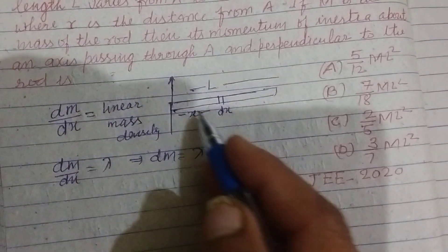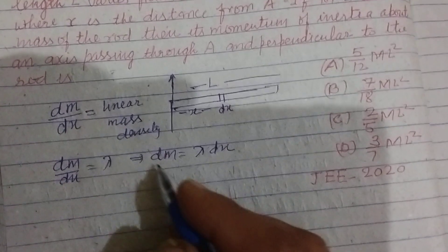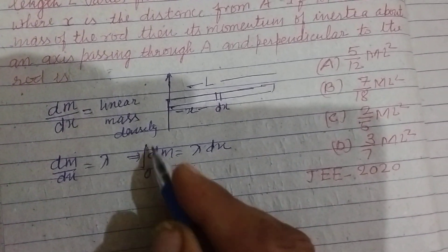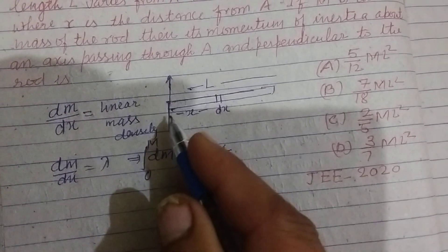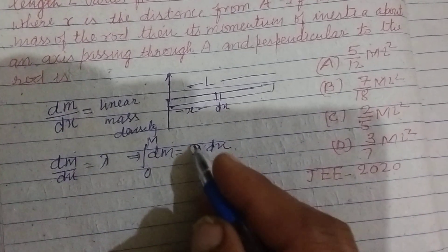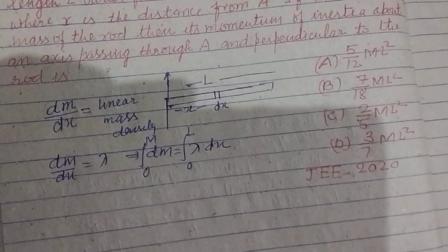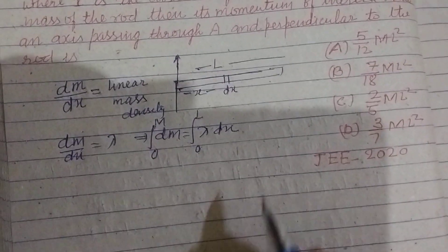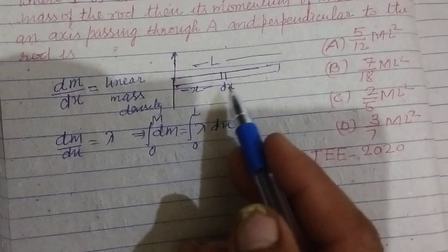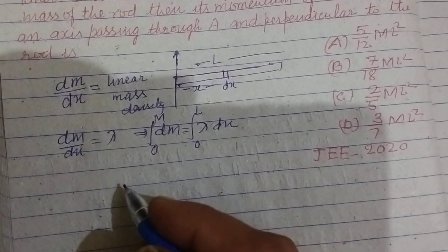Now, integrating on the whole length L, we take 0 to M because mass of total length is M and this is 0 to L. Total length is L. We are considering a small element of this rod.